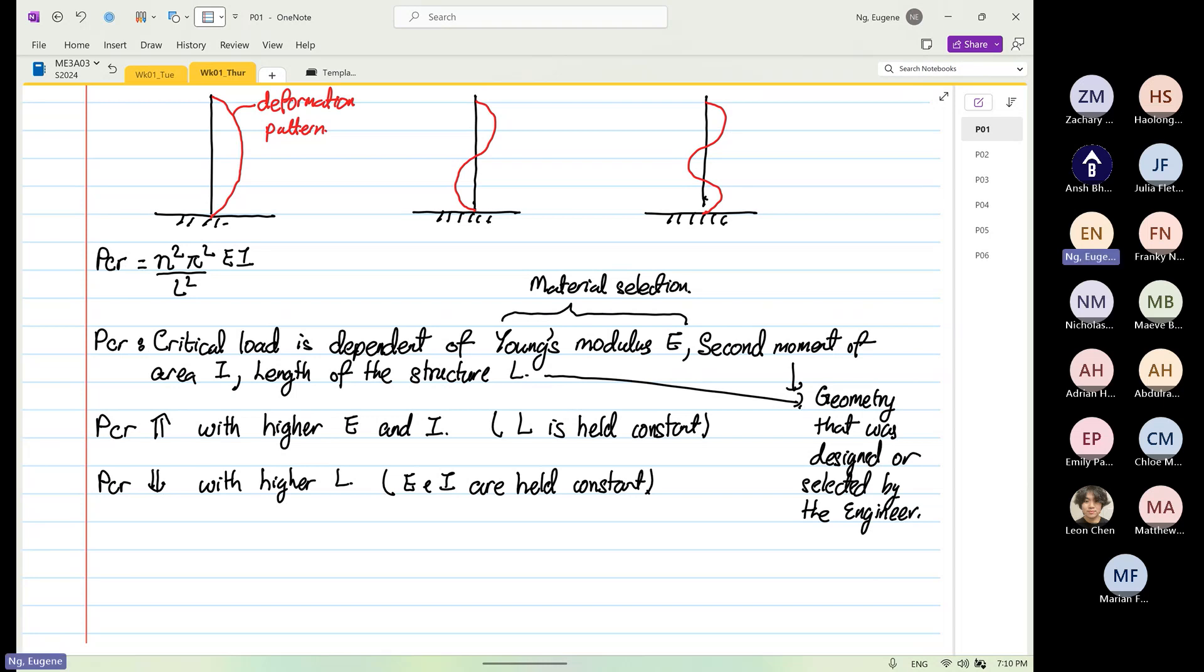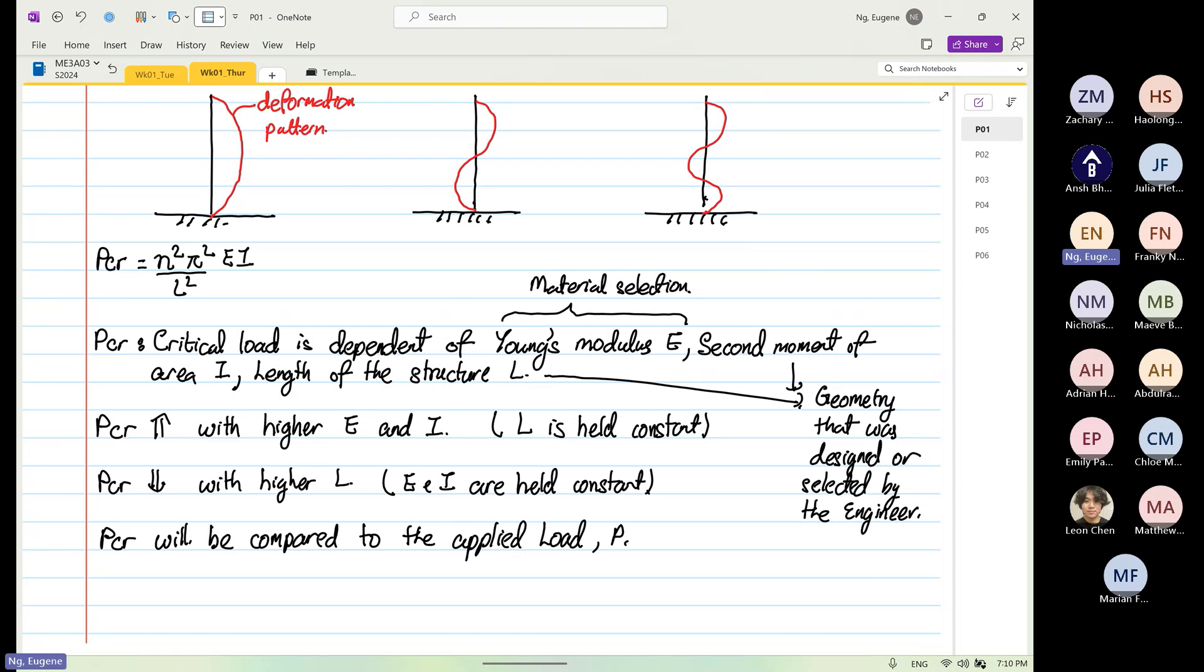So now you have calculated your critical load. You have to later on compare. So the critical load will be compared to the applied load, which is P. So if P is less than P_CR, structure will not buckle. If P is greater than P_CR, structure will buckle. So P is what has been applied. P_CR is dependent on your Young's modulus, your second moment of area, and the length of the structure.